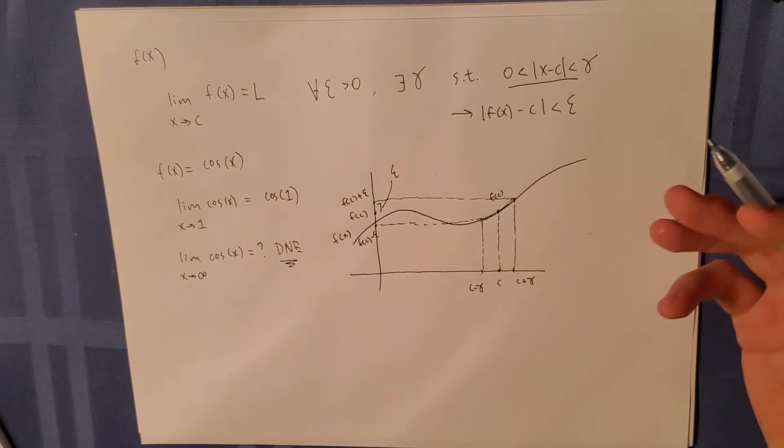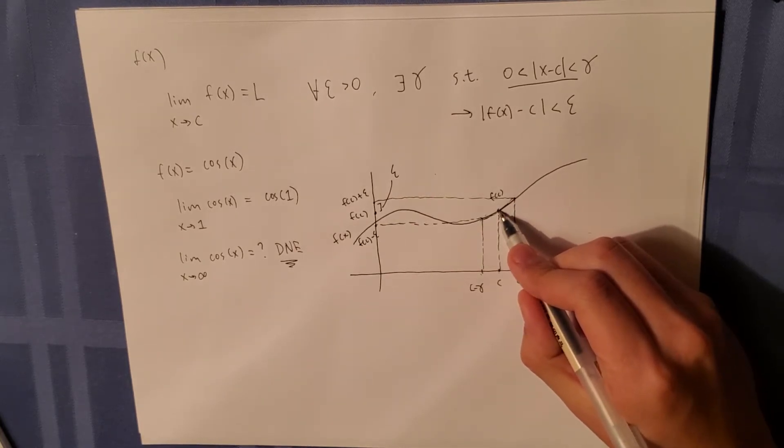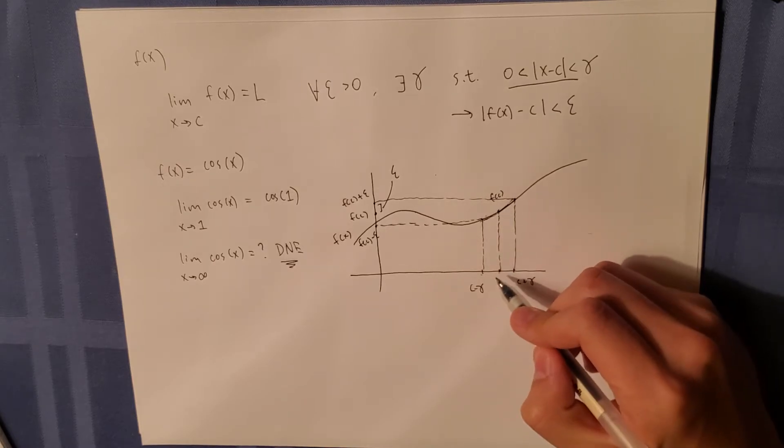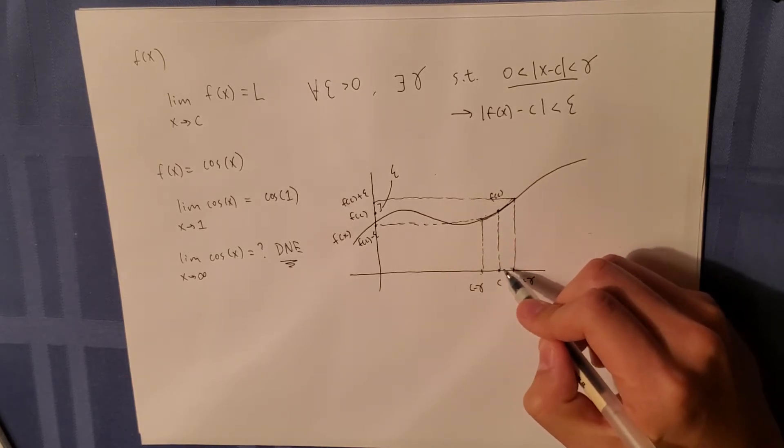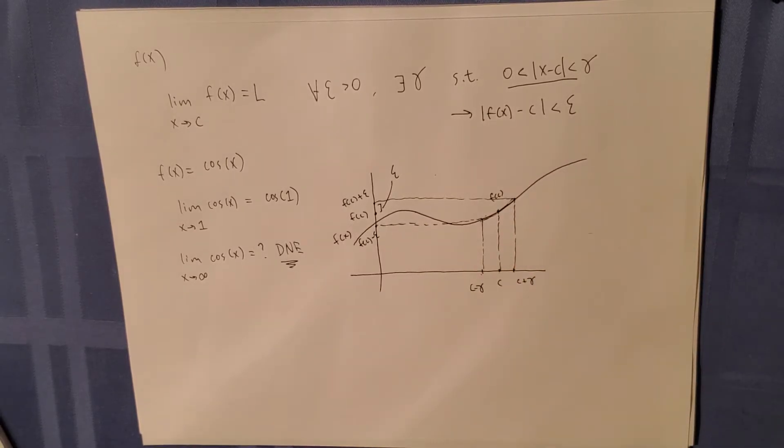It's basically saying that as you get smaller and smaller and smaller difference of epsilon closer to your value f of c, the values around f of c must approach f of c.